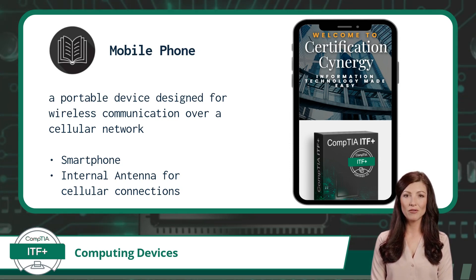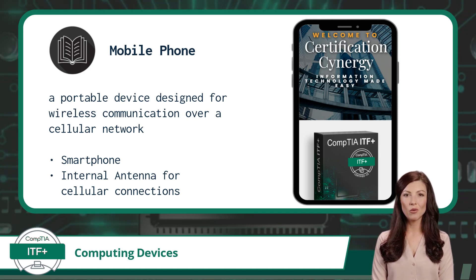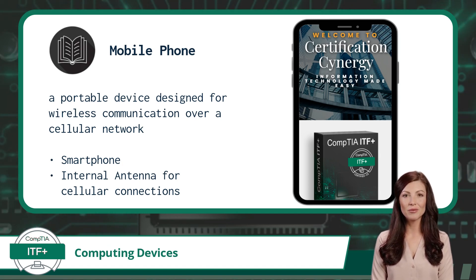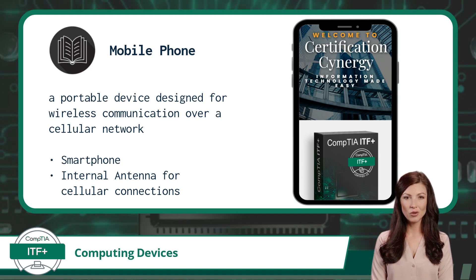No wonder people now refer to a mobile phone as a smartphone. A mobile phone works by utilizing a combination of hardware and software components, including an internal antenna to receive and transmit cellular network signals. They also utilize ARM processors due to space limitations.